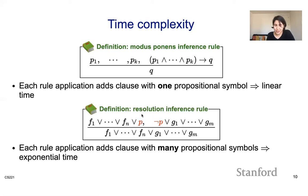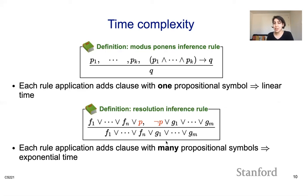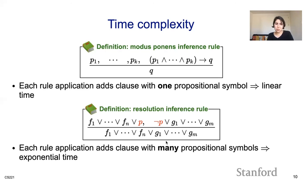When thinking about the resolution inference rule, we are adding many propositional symbols back to our knowledge base. In the worst case, you are adding all subsets of disjunctions of these symbols, which means you have to go over all of them — that takes exponential time. So running resolution is exponential in time complexity.